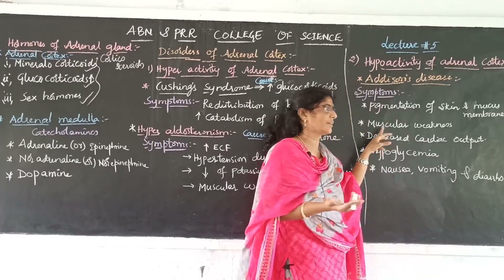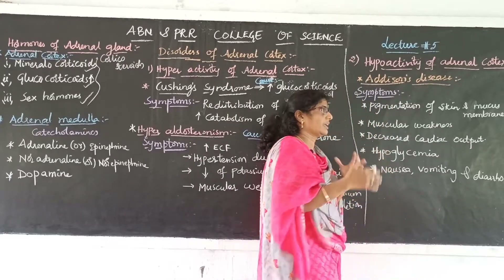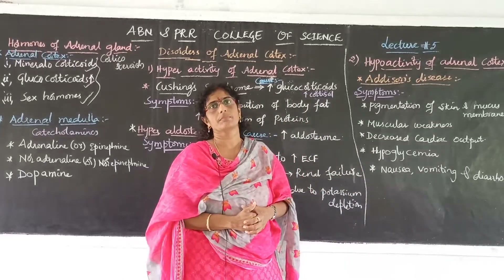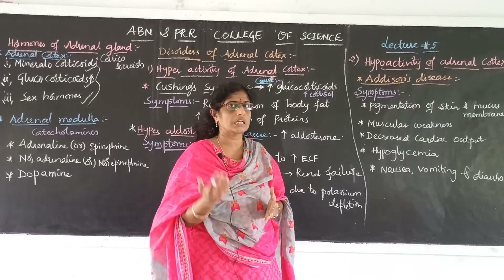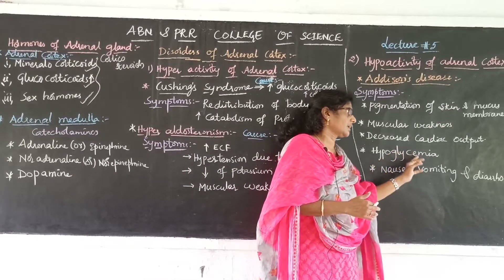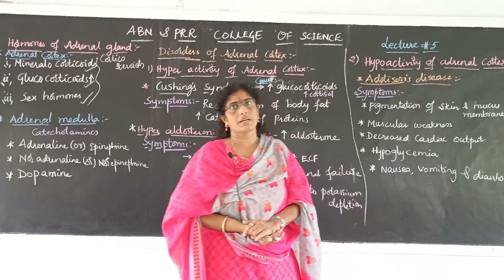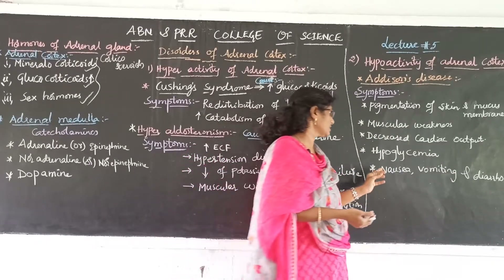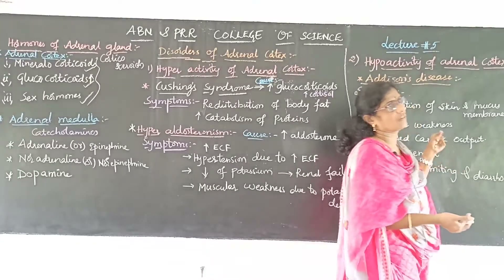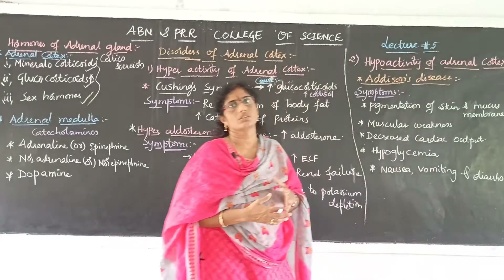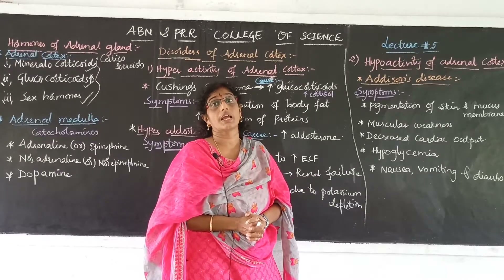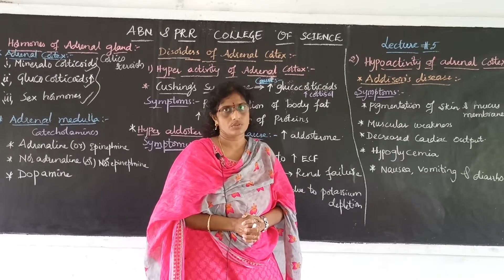Muscular weakness is a secondary symptom of Addison's disease. Decreased cardiac output also occurs — normally cardiac output is around 72 BPM, but it becomes lower. The body also shows decreased glucose levels, leading to hypoglycemia. Other secondary symptoms include nausea, diarrhea, and vomiting. These are all symptoms of Addison's disease, caused by hypoactivity of adrenal corticosteroids.